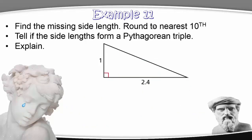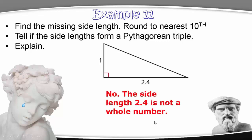In Example 11, we find the missing side, round to the nearest tenth, and tell if the side lengths form a Pythagorean triple. We can say right away that this cannot be a Pythagorean triple, because one of the given side lengths is a decimal — 2.4 is not a whole number. The fact that we're asked to round to the nearest tenth also confirms there is no Pythagorean triple here.